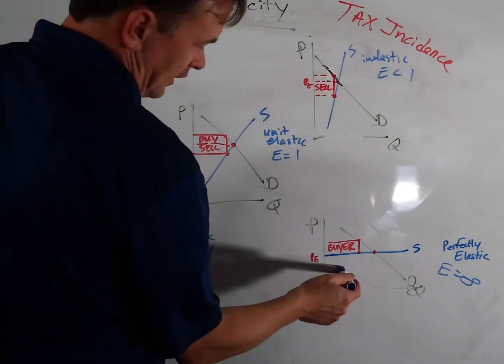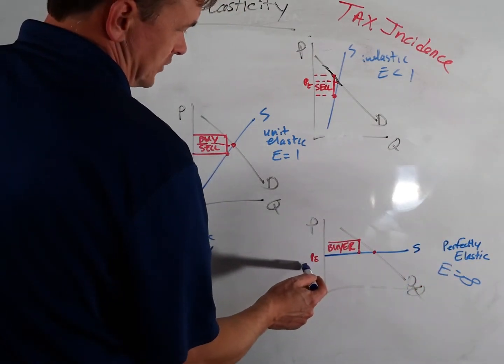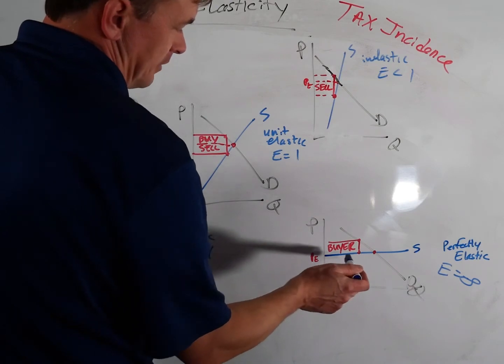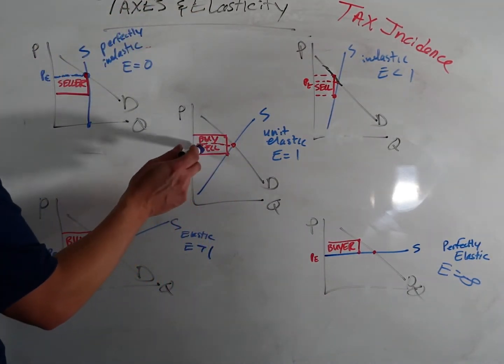On the opposite side, there is a supply that's perfectly elastic. Sellers are like, you know what, you change the price a little bit, I'm not going to make any of it for you. So that means buyers are going to have to pay all the tax. If we have unit elastic on both sides, they're going to pay an even amount.